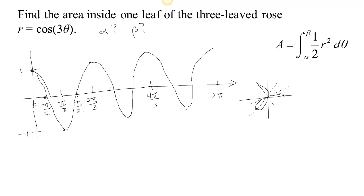Continuing from pi/2 to 2 pi/3, the radius gradually increases until at 2 pi/3 we have radius 1. Then from 2 pi/3 to 5 pi/6 the radius goes back to zero, and from 5 pi/6 to pi we have negative radii again, finishing off the third leaf. All we need is the area of one leaf. If we just go from 0 to pi/6, that gives us half of one leaf, and we can double it to get the full leaf area.